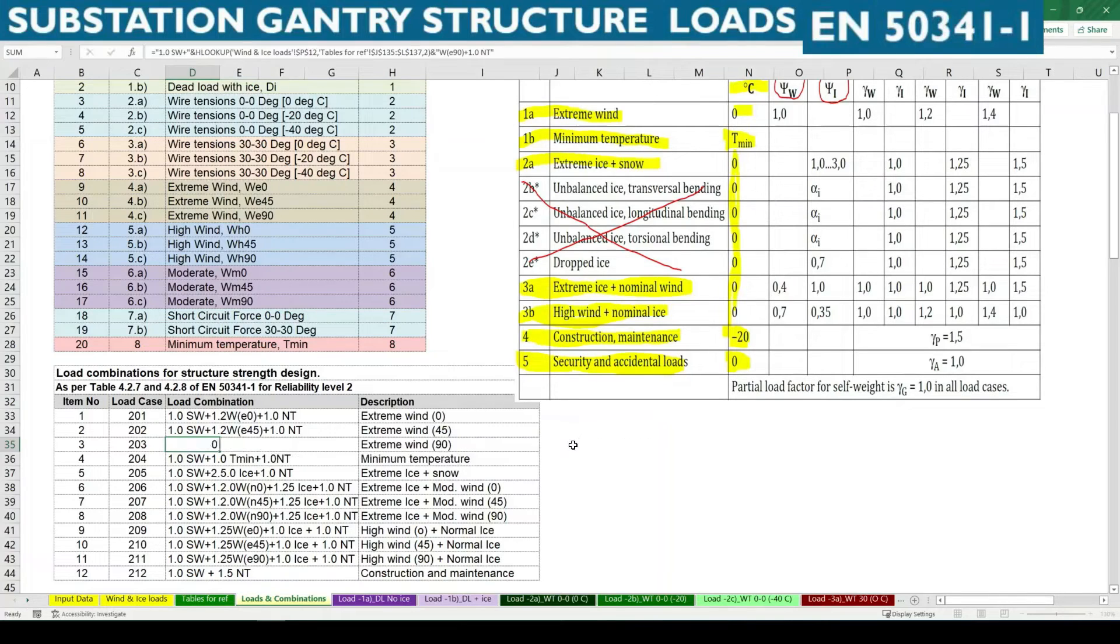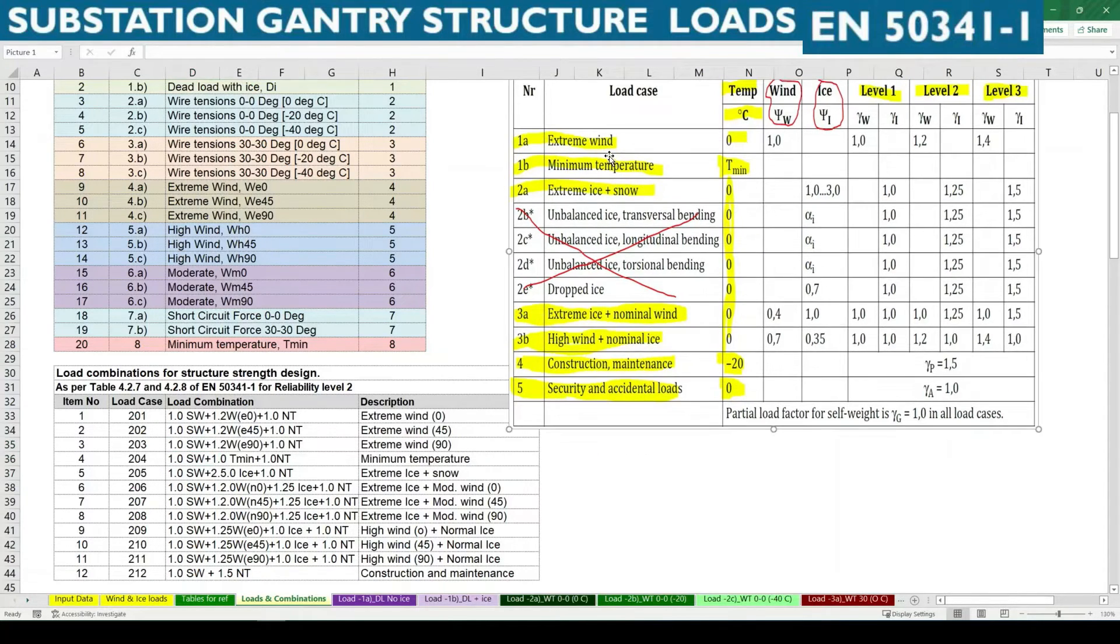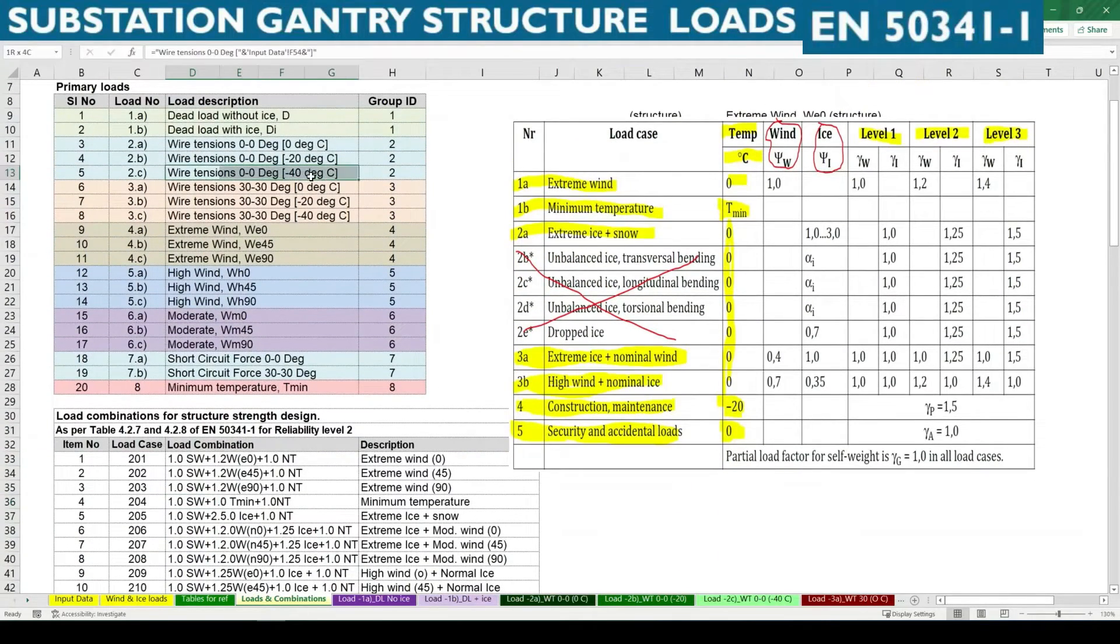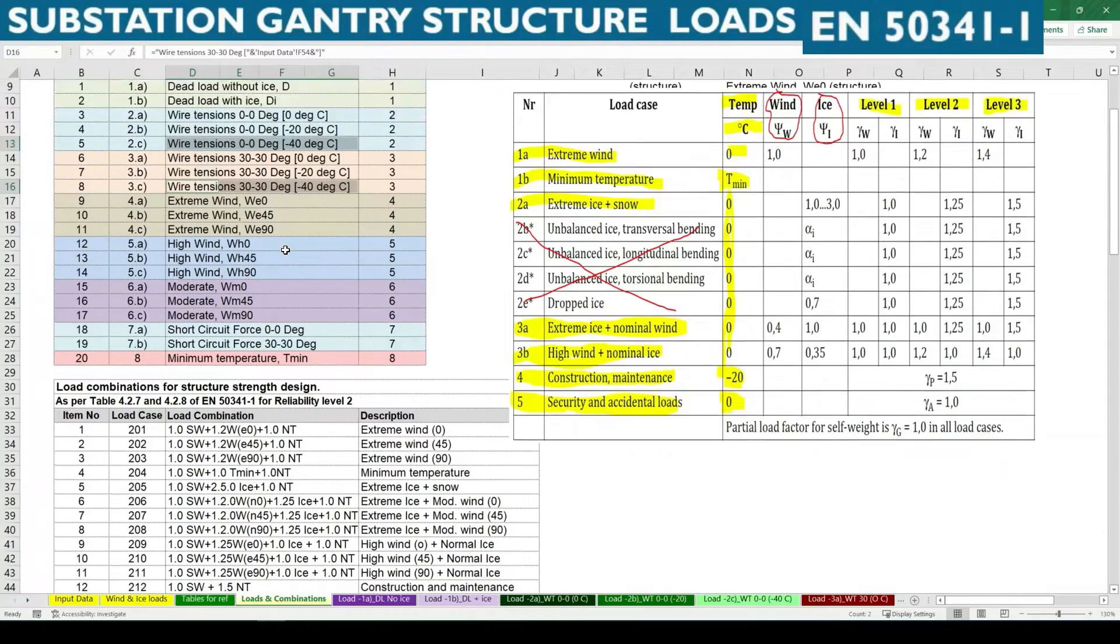So likewise we need to derive the load combination from the table shown here. Extreme wind, so these are the three cases, and minimum temperature is T minimum where we need to consider this minus 40 degree wire tensions in both deviations, so 0 degree and 30 degree.